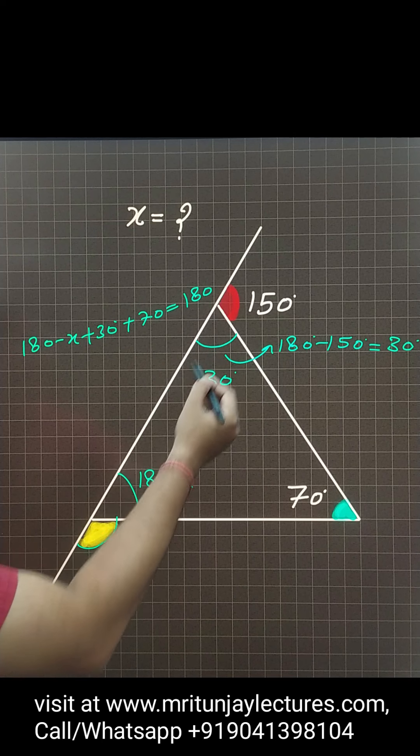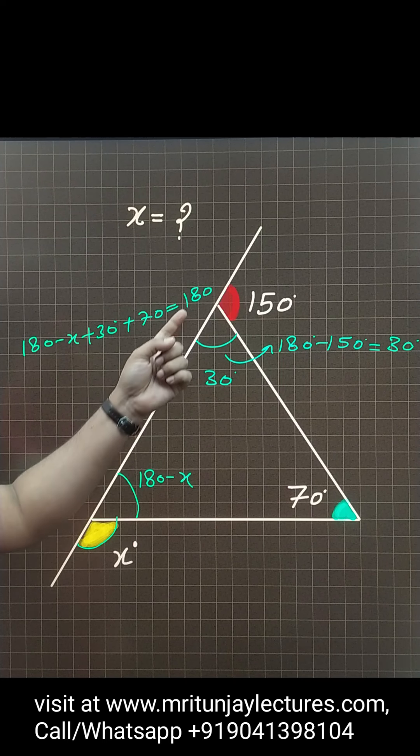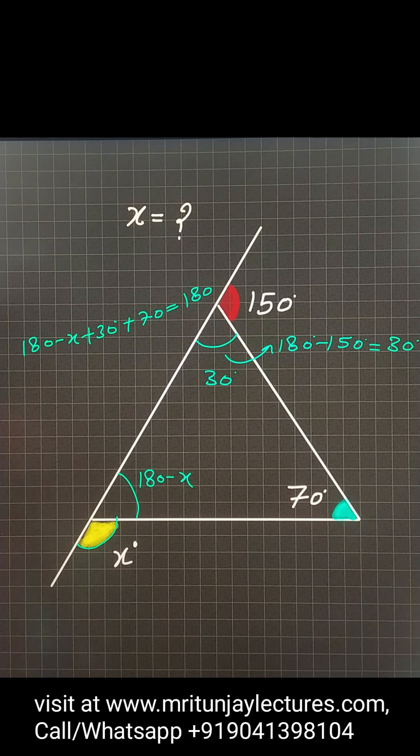Sum of these three angles. In any triangle, sum of these three angles is how much? 180, inside angles 180.